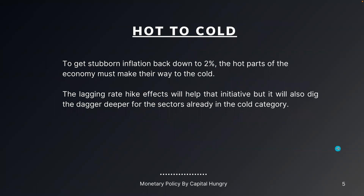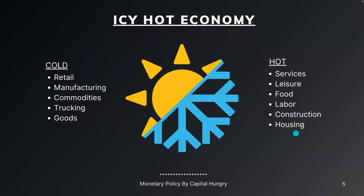Hot to cold: to get stubborn inflation back down to 2%, the hot parts of the economy must make their way to the cold. The lagging rate hike effects will help that initiative, but will also dig the dagger deeper for sectors already in the cold category. In order to dampen services, leisure, food, labor, and construction, the lag effects from the rate hikes — experienced around 18 to 24 months out — will subdue those sectors, but will also further damage areas that are already cold.